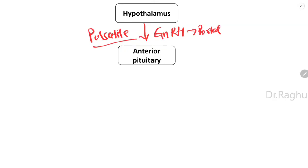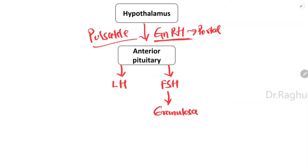GnRH travels via the portal blood vessels into the anterior pituitary. Under the influence of GnRH, the anterior pituitary secretes two hormones collectively called gonadotropins: follicle stimulating hormone (FSH) and luteinizing hormone (LH). FSH acts on granulosa cells in the ovary, causing them to secrete two hormones — estrogen and inhibin.